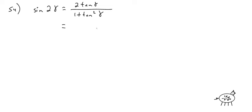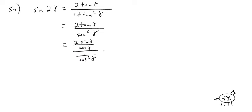The bottom is an identity: 1 plus tangent squared is secant squared of gamma. Then write it in sines and cosines: 2 sine of gamma over cosine of gamma divided by 1 over cosine squared of gamma. Multiply both sides by cosine squared of gamma, and you get 2 sine of gamma cosine of gamma — the cosines cancel and the bottom cancels completely.